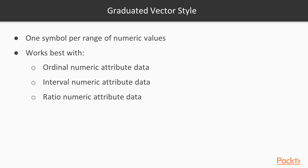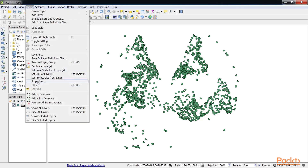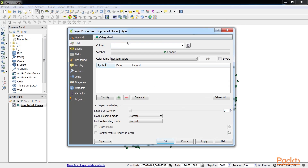Next vector styling is the Graduated vector style, which applies one symbol per range of numeric attribute values. This vector style is the best when you want a different symbol that is based on a range of numeric attribute values, such as when styling gross domestic product polygons or city population points. The Graduated vector style works best with ordinal, interval, and ratio-numeric attribute data. We will be using the same populated places layer. In Layer Properties, change the style to the Graduated vector.